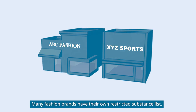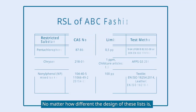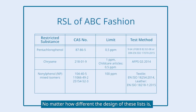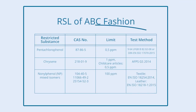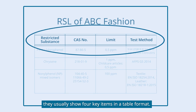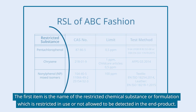Many fashion brands have their own Restricted Substance List. No matter how different the design of these lists is, they usually show four key items in a table format. The first item is the name of the restricted chemical substance or formulation, which is restricted in use or not allowed to be detected in the end product.